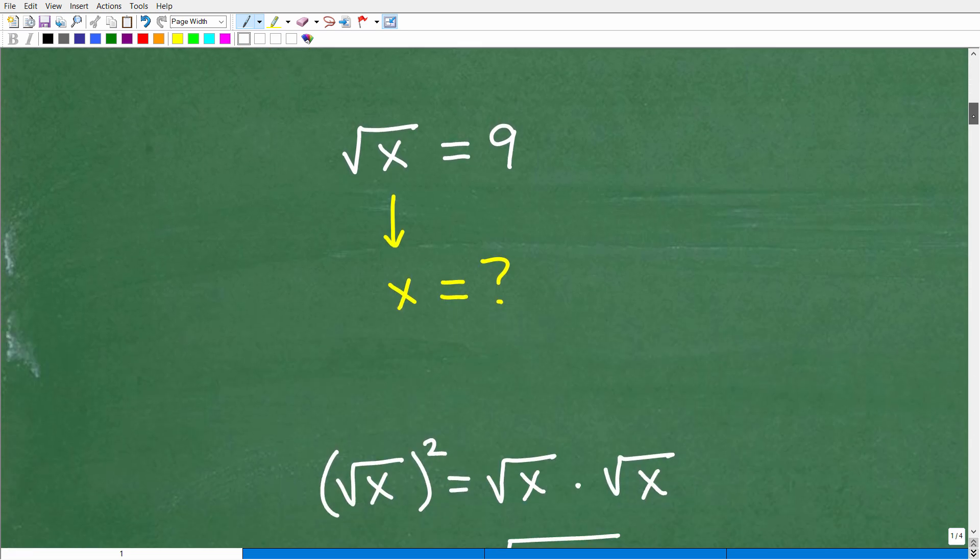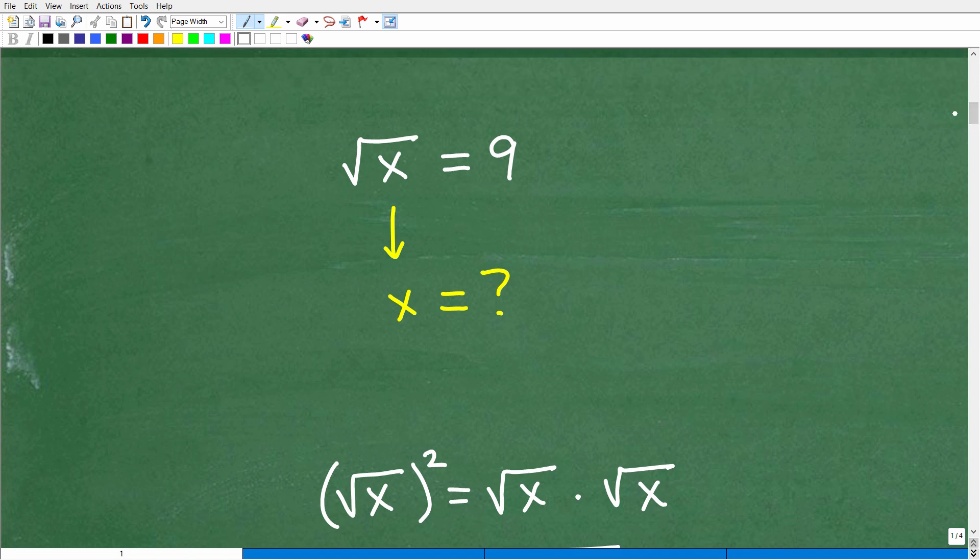Okay, so any time in algebra when you're trying to solve an equation, what you're trying to do is solve for this particular variable, whatever you're trying to solve for. So in this case, we have the square root of X is equal to 9. Again, we're trying to figure out what is the value of X. Now, we know that X is equal to 81 because if I replace this X with an 81, the square root of 81 is 9. So X must be 81. So we know that.